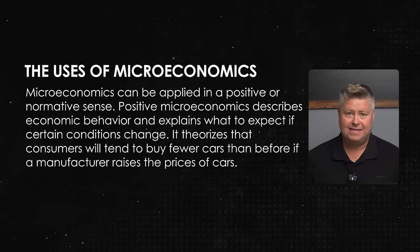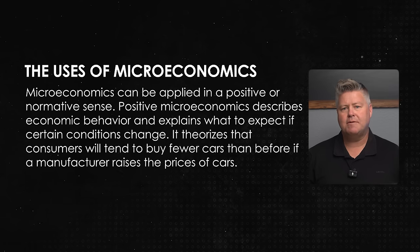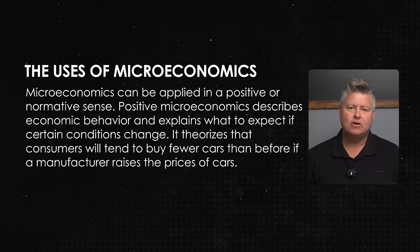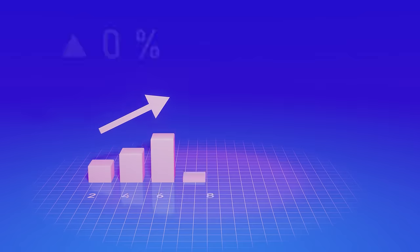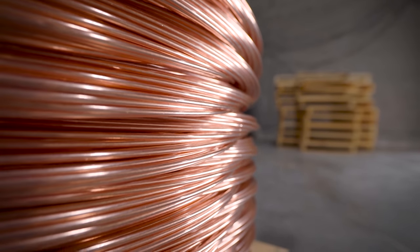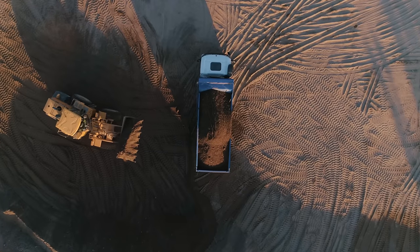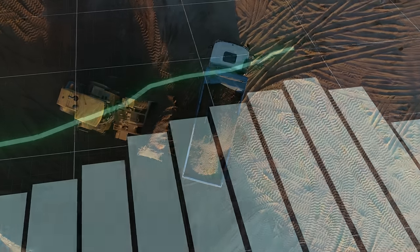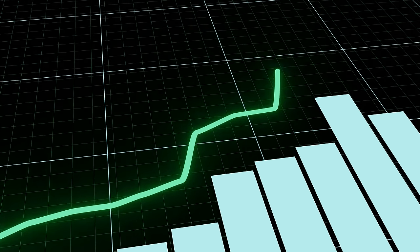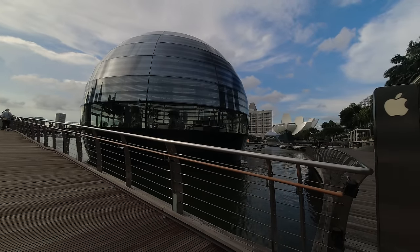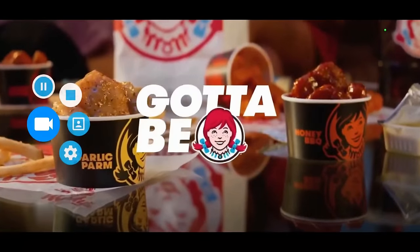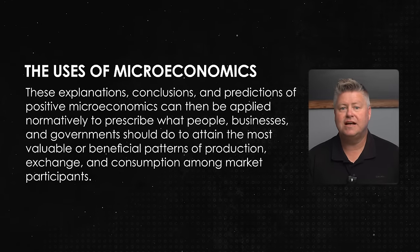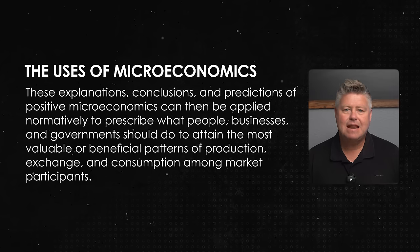Now let's talk about the uses for microeconomics. These can be applied in a positive or normative sense. Positive microeconomics describes economic behavior and explains what to expect if certain conditions change. It theorizes that consumers will tend to buy fewer cars if a manufacturer raises prices, the price of copper will tend to increase if a major copper mine collapses in South America because supply is now restricted. Positive microeconomics could help an investor see why Apple stock prices may fall if consumers buy fewer iPhones, or why a higher minimum wage might force Wendy's to hire fewer workers.